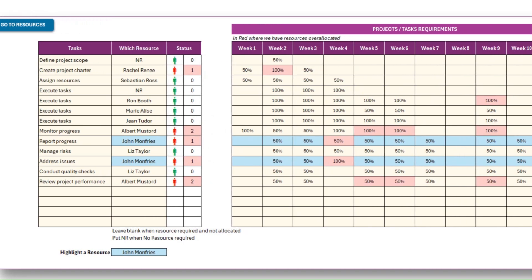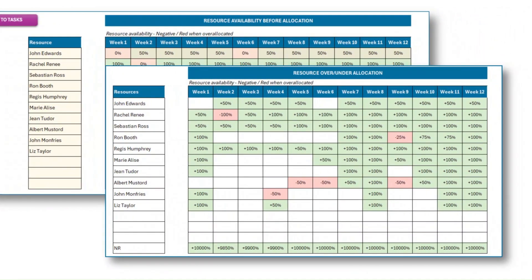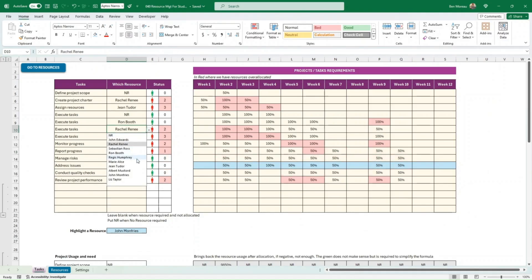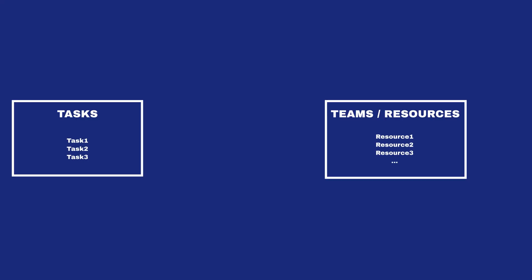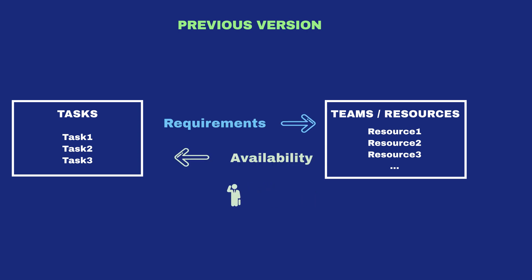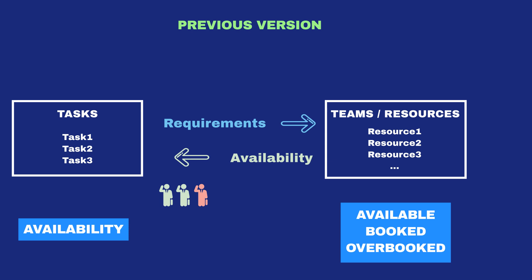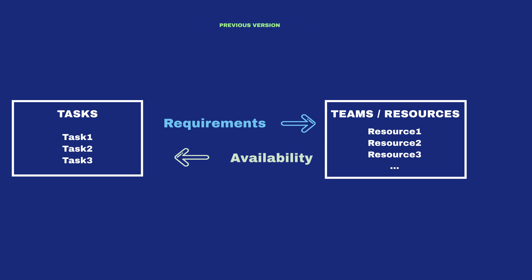In the previous video I showed you how to build resource management software where on one side you could input tasks with estimates and on the other side you could input resource availability. The software was syncing both and telling you what availability you have on your project and which resources were overbooked. It's an Excel spreadsheet you can build from scratch — I'll give you the link if you haven't done it yet.